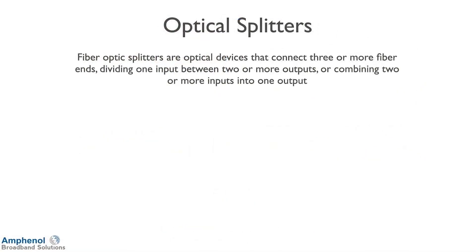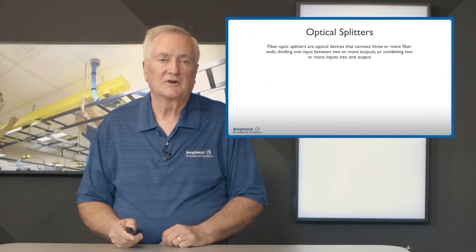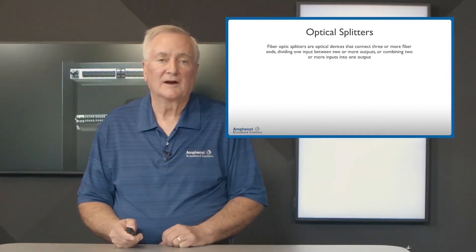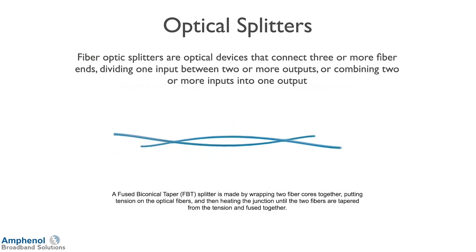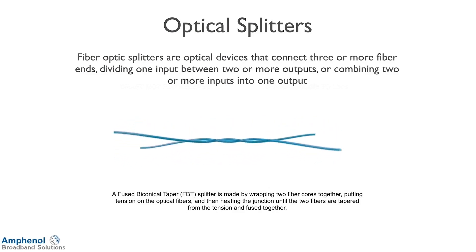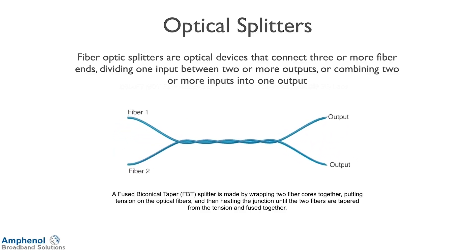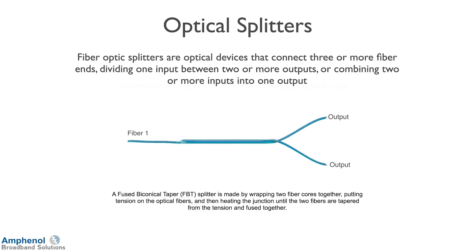Next we'll look at optical splitters. With optical fiber just going in one direction it doesn't do us much good — we need to split it to feed different applications. Fiber splitters are very similar to the RF splitters; they connect devices with three or four or more ports. First we'll look at the fused biconical taper splitters, FBTs. We take two fibers, bring them together, wrap them around each other, apply a little pressure and heat, and fuse them together. Once fused, we remove one input fiber, giving us one input and two outputs. FBT splitters can have up to four outputs.